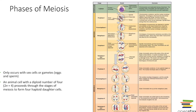When we undergo mitosis, that cell is going to make a carbon copy of itself and at the end you will have two identical daughter cells. Meiosis is only needed for cells that are going to produce gametes — cells that are going to produce eggs and sperm. That is the only time we discuss meiosis. All the other cells in the body are going to undergo mitosis.